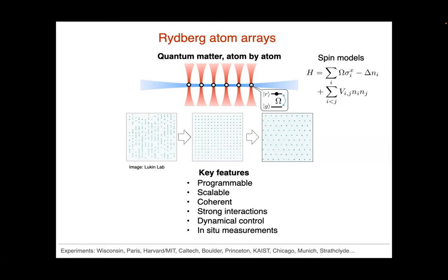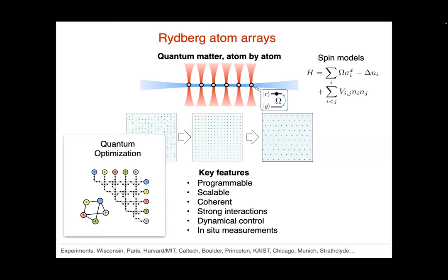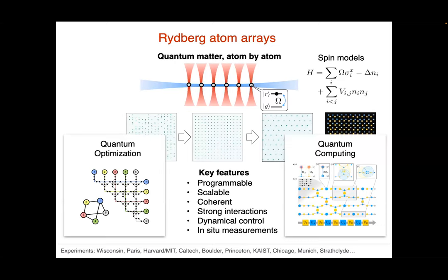What I'm going to try to convince you is that you can combine these things to do quantum optimization. In the second part of my talk, I will use the fact that you can also have two-species atom arrays to do universal quantum computation using only global driving of the atoms.